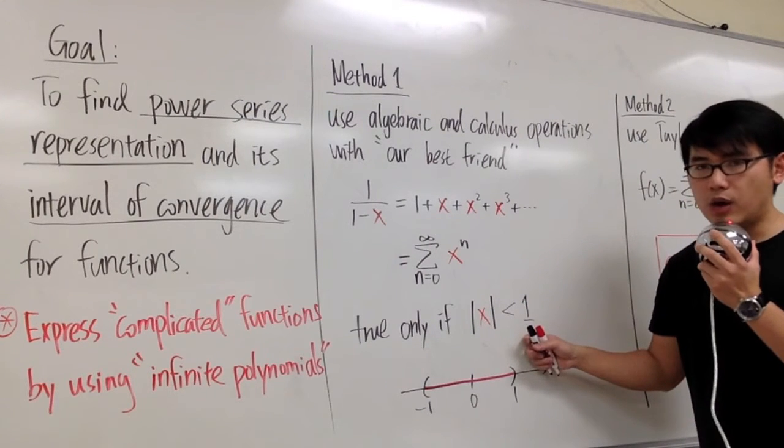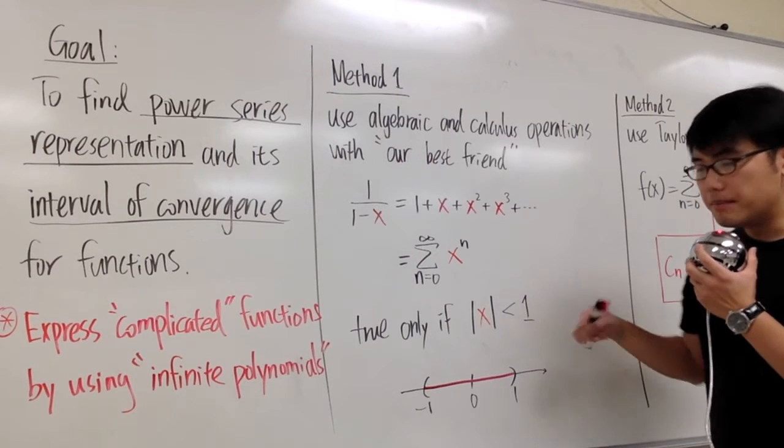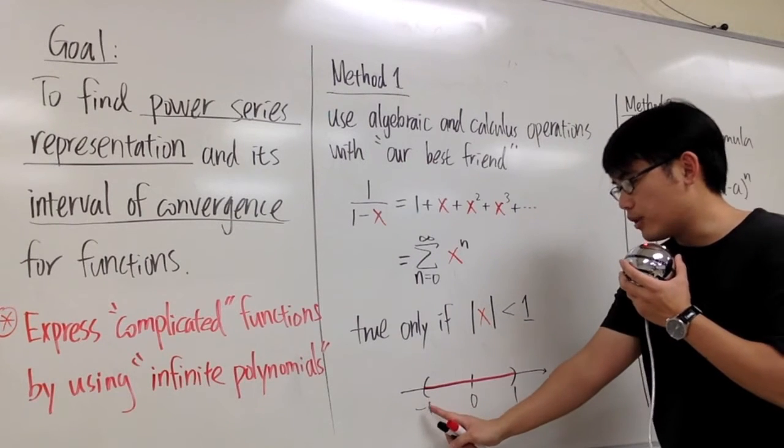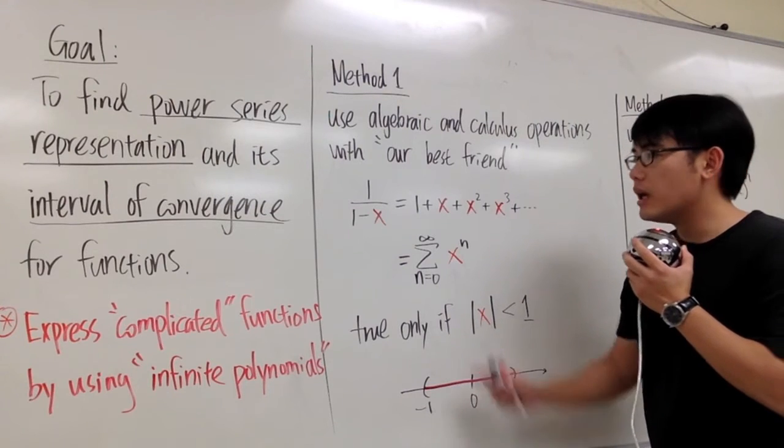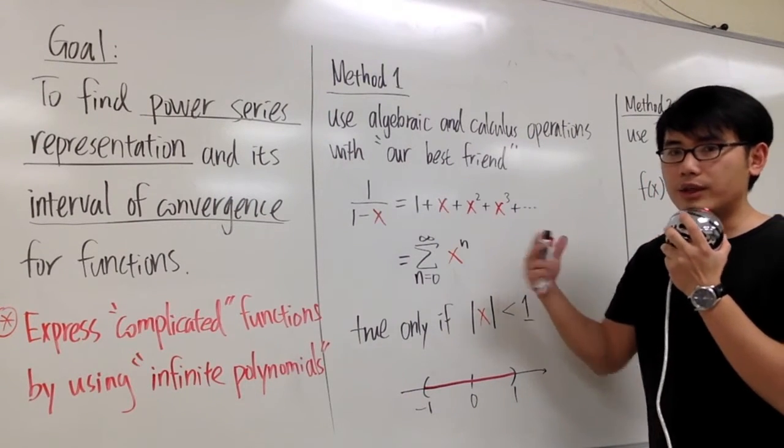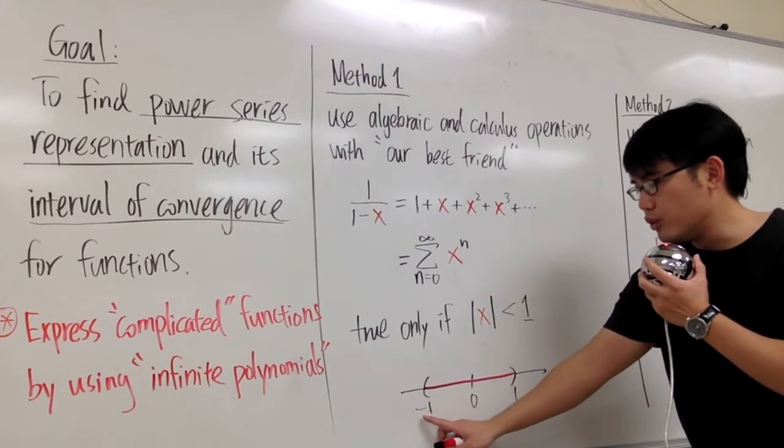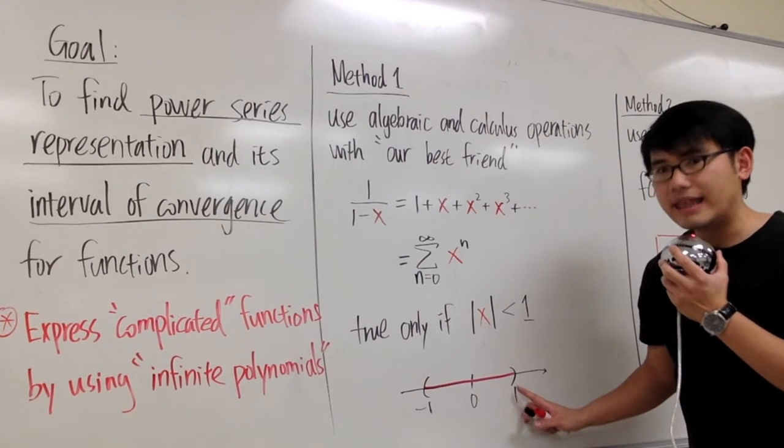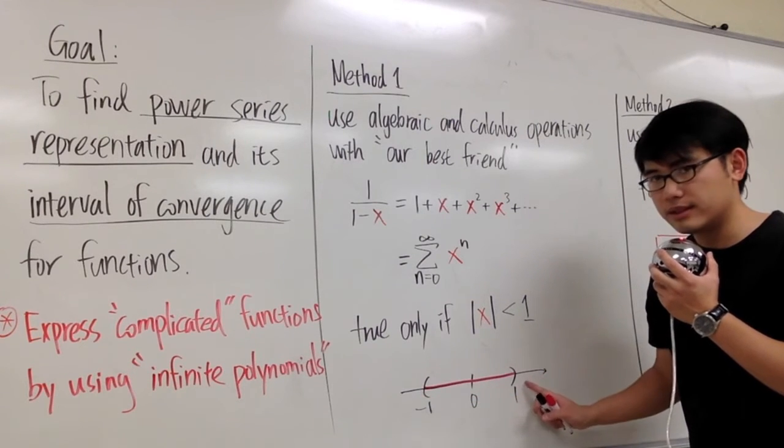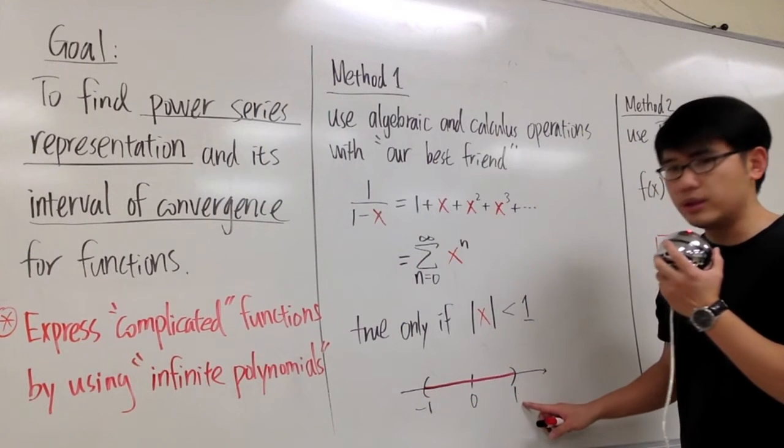And this right here tells us the radius of convergence is 1. But then more specifically, we would like to talk about the interval of convergence, which is right here. Our best friend only converges, meaning that we can only use our best friend if the x value is in between negative 1 and 1, not including these two endpoints. That's why we use parentheses right here.